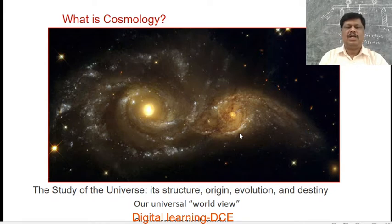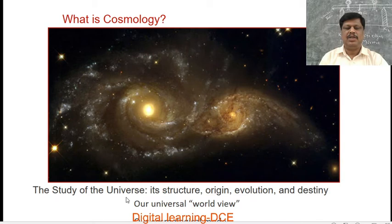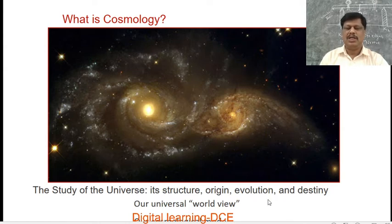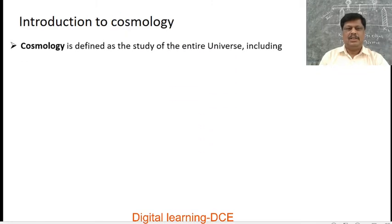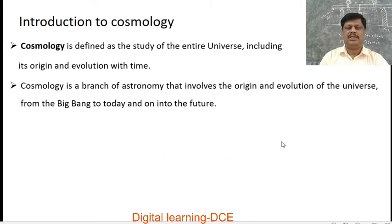First of all, what is cosmology? This diagram shows how the stars and galaxies are formed in the universe. The study of the universe — its structure, origin, evolution, and destiny — is cosmology. Cosmology is defined as the study of the entire universe, including its origin and evolution with time.